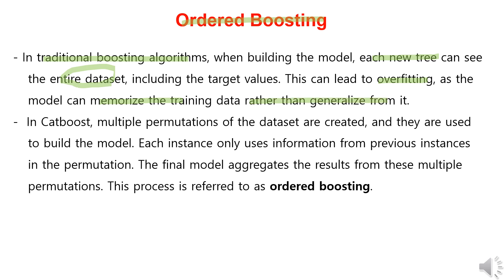In CatBoost, multiple permutations of the dataset are created and used to build the model. Each instance only uses the information from previous instances in the permutation, and the final model aggregates the results of these multiple permutations. This process is called ordered boosting, which prevents overfitting and helps the model generalize better.